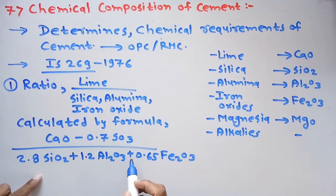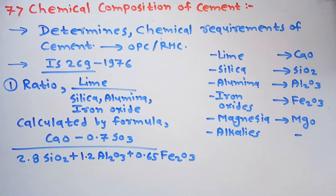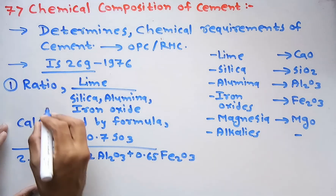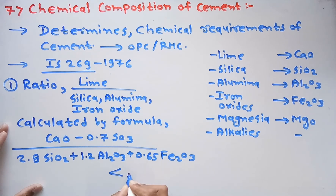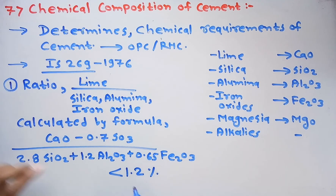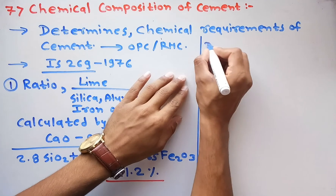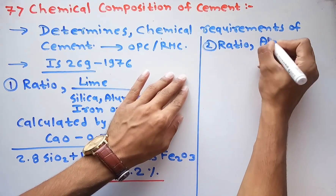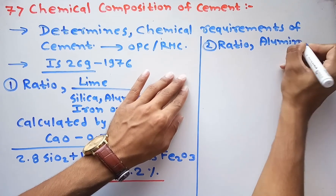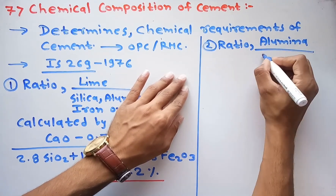This formula is used to determine the chemical requirement. To achieve good quality cement, this ratio of lime to silica, alumina, and iron oxide should be less than 1.2. The second ratio that we take is of alumina to iron oxide.